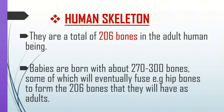Introduction to the skeletal system. The human skeleton has a total of 206 bones in an adult human being. Babies are born with about 270 to 300 bones, some of which will eventually fuse — for example, the hip bones — to form the 206 bones they have as adults. This is a very interesting topic, and we're going to explore all the characteristics of bones and all the bones in the human body.